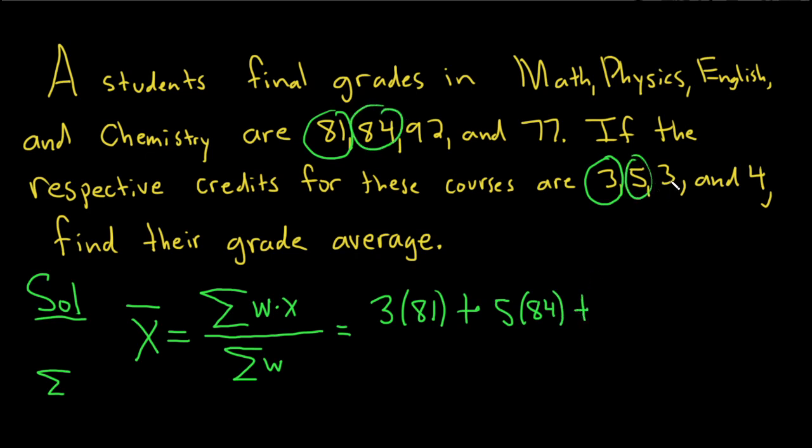I forgot to circle them. English is only three credits, so it's 3 times 92. Plus.